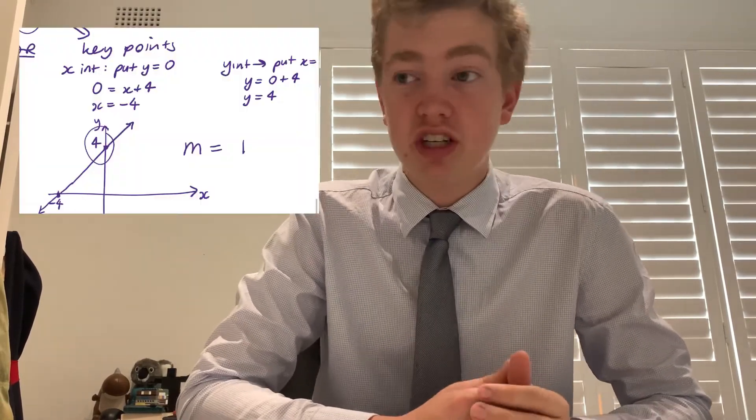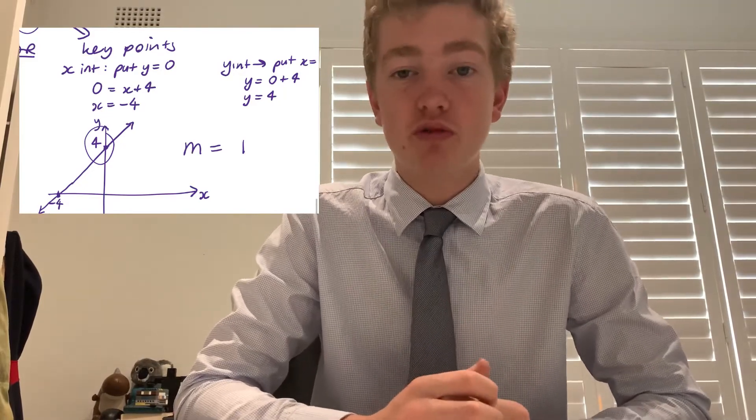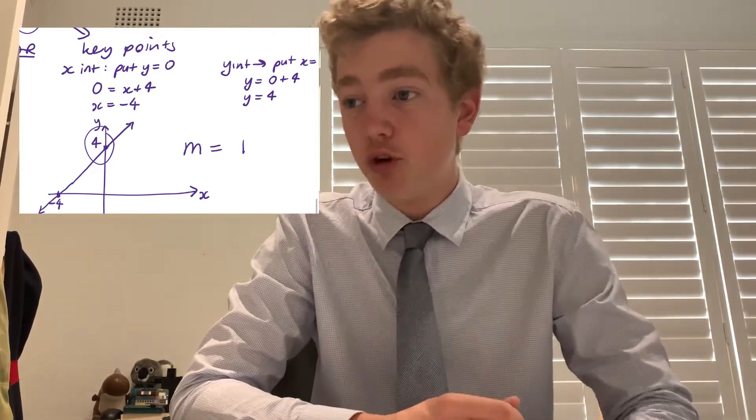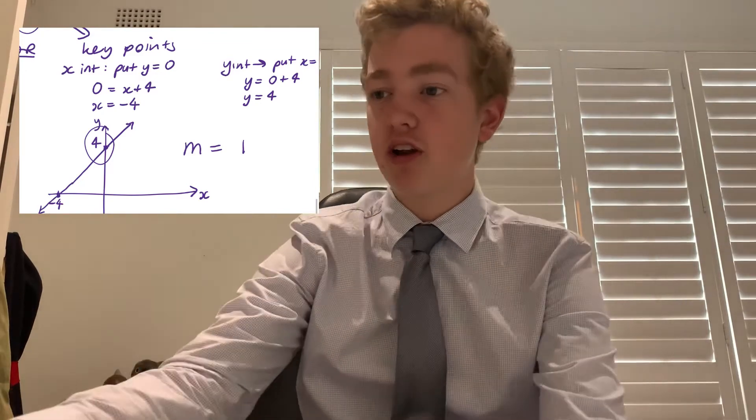To find the y-intercept, set x to 0. To find the x-intercept, set y to 0. For example, sketching y = x + 4: set y to 0, so 0 = x + 4. Subtract 4 from both sides: x = −4. That's our x-intercept. Now we have two points: x-intercept at −4 and y-intercept at 4. Draw a line straight through them — that's how you graph a line.